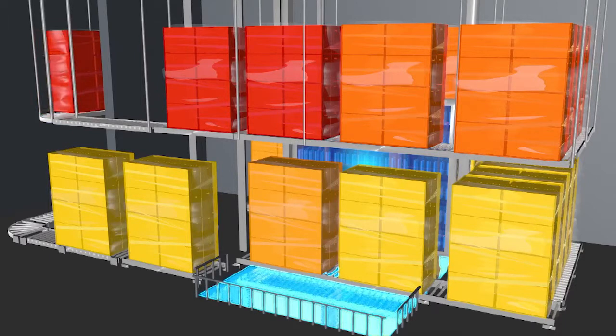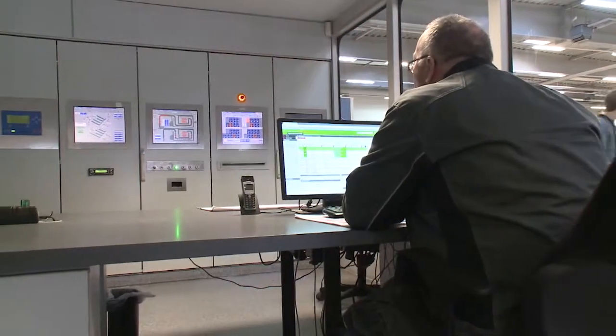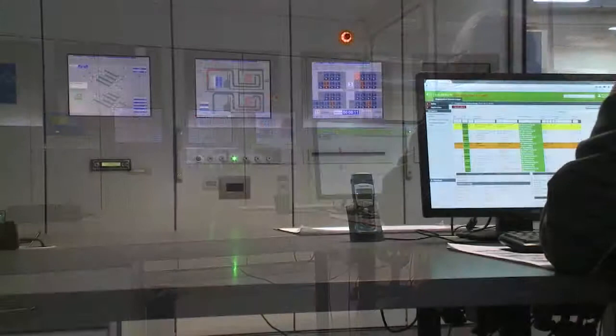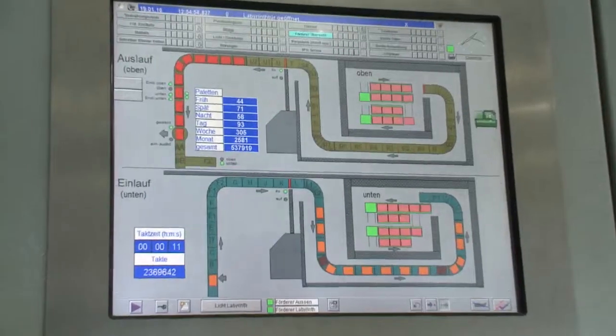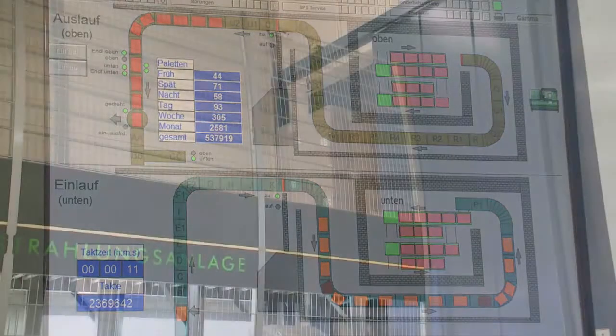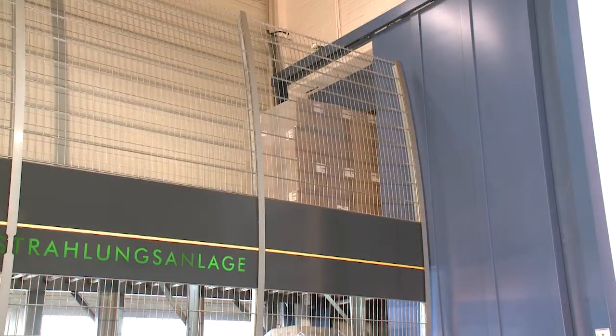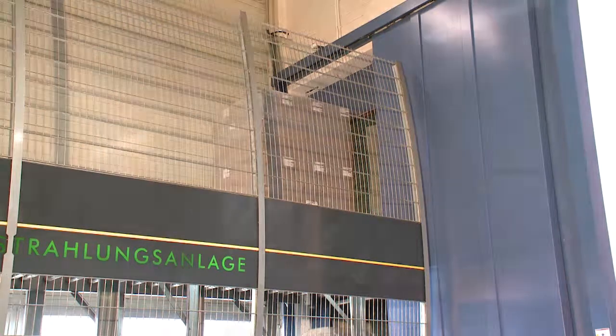The irradiation rhythm of every single pallet in the gamma facility is automatically controlled. The sophisticated plant logistics with two transport levels allows to achieve the correct radiation dose for each and every pallet individually.